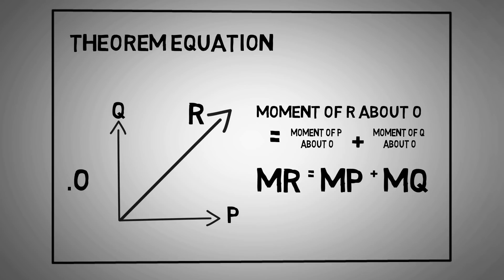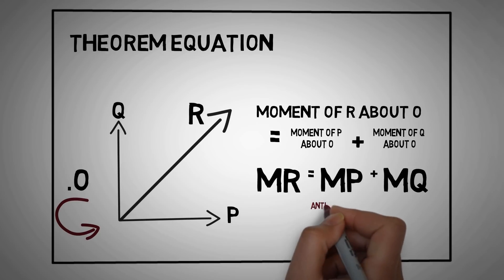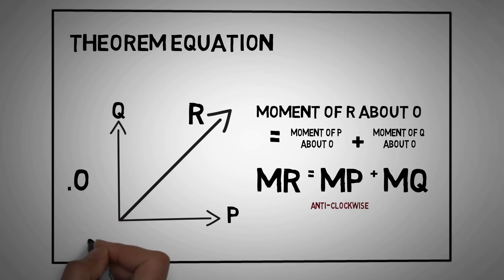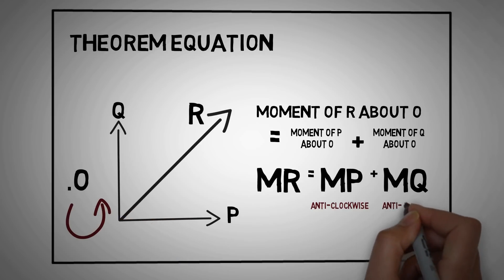Let's consider two scenarios. In the first scenario, the location of O is here. Force P causes anticlockwise rotation about O, so MP is anticlockwise. And force Q also causes anticlockwise rotation about O, so MQ is also anticlockwise.